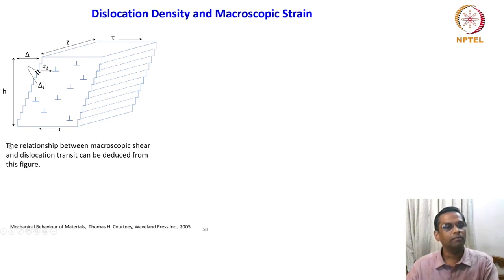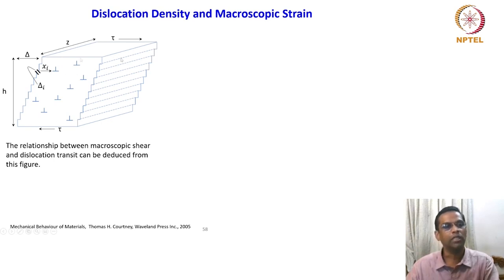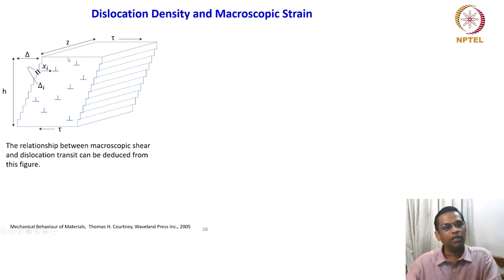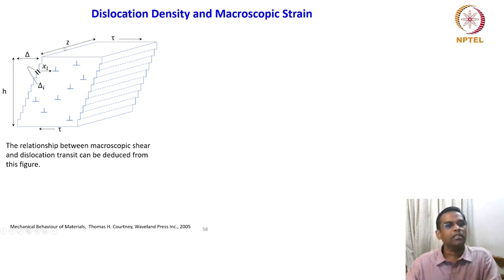Look at this unit or crystallite — it has slipped. You can see multiple slip lines; the whole crystal has slipped. It is a complete shear. The height is h and the displacement is delta. The dimension here is z, the length is z, and the shear force is applied in these two directions. The relationship between macroscopic shear and a dislocation transit can be deduced from this figure.